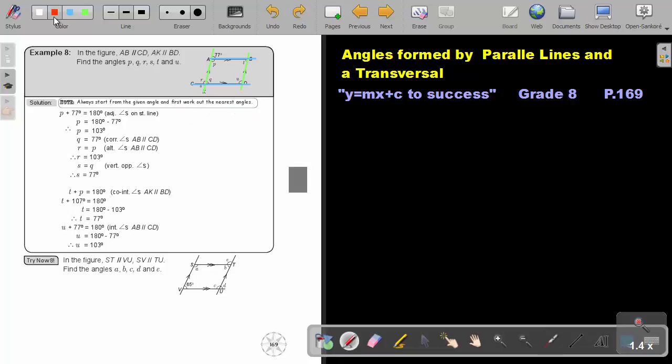So, what angle is given? This angle is given, 77. So first work out the angles closest to this angle. So that will be P.